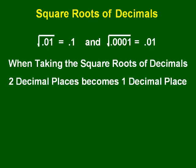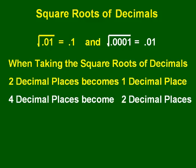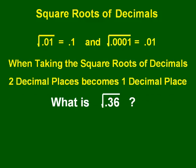When taking the square roots of decimals, notice that when we have two decimal places inside the square root, we get one decimal place in our answer. When we have four decimal places inside the square root, we get two decimal places in our answer. For example, the square root of 0.36: we know the square root of 36 is 6, and two decimal places become one, so the answer is 0.6.